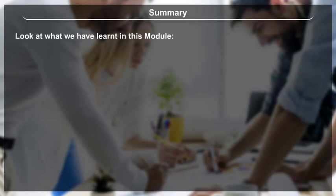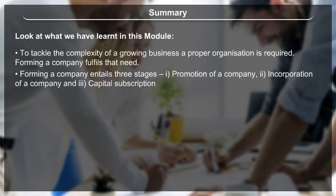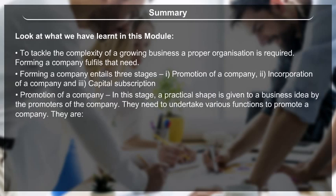Summary: To tackle the complexity of a growing business, a proper organisation is required, and forming a company fulfils that need. Forming a company entails three stages: promotion, incorporation, and capital subscription. In the promotion stage, a practical shape is given to a business idea by the promoters of the company, who undertake various functions.